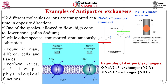The Na+/Ca2+ exchanger, NCX, is ubiquitously found in many cells and tissues and plays an important role in cytoplasmic Ca2+ homeostasis. It couples the inward movement of 3 Na+ ions down the Na+ electrochemical gradient to the uphill movement of 1 Ca2+ ion against the electrochemical gradient. Resting Ca2+ concentration in the cytoplasm is 70 nM and in extracellular fluid is 2 mM respectively. Therefore NCX is electrogenic.